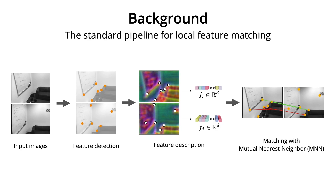In the detection phase, salient points like corners are separately detected as interest points from each image. Local descriptors are then extracted around neighborhood regions of these interest points, which can be later matched by mutual nearest neighbor search.